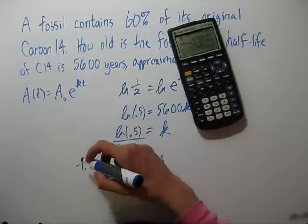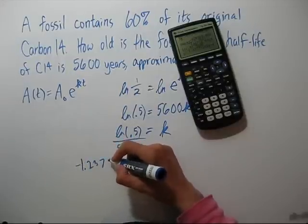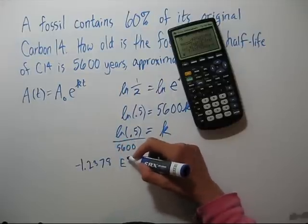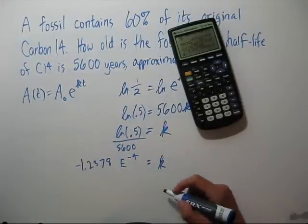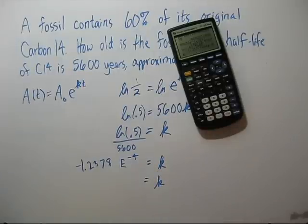Now the calculator says negative 1.2378 and it says e negative 4. That's scientific notation. And it means times 10 to the negative 4th.